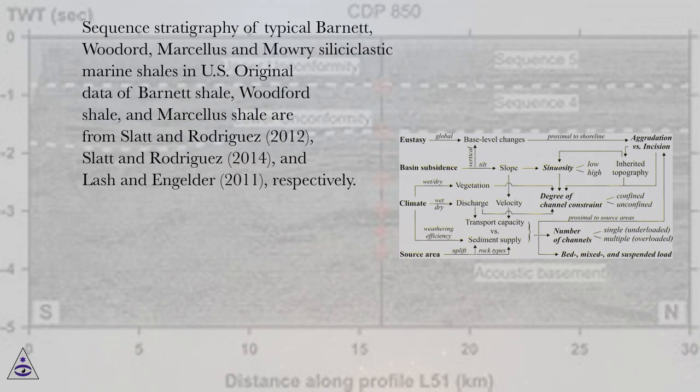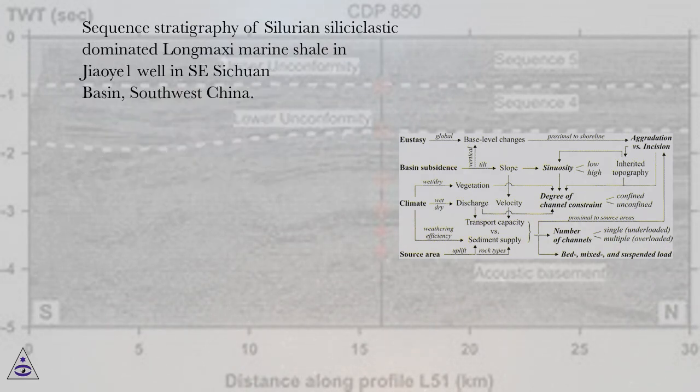Sequence stratigraphy of typical Barnett, Woodford, Marcellus, and Mori siliciclastic marine shales in U.S. Original data of Barnett shale, Woodford shale, and Marcellus shale are from Slott and Rodriguez (2012), Slott and Rodriguez (2014), and Lash and Engelder (2011), respectively. Sequence stratigraphy of Silurian siliciclastic-dominated Long Maxi marine shale in Zhao-1 well in SC Sichuan Basin, southwest China.